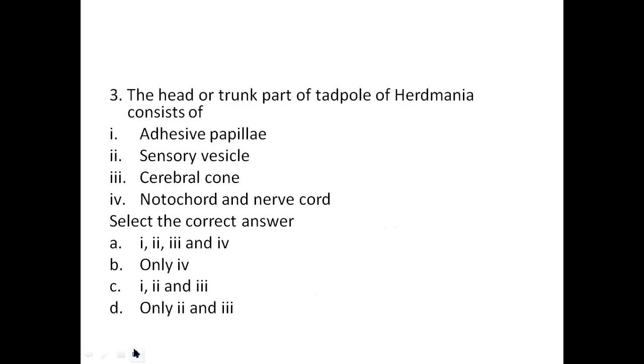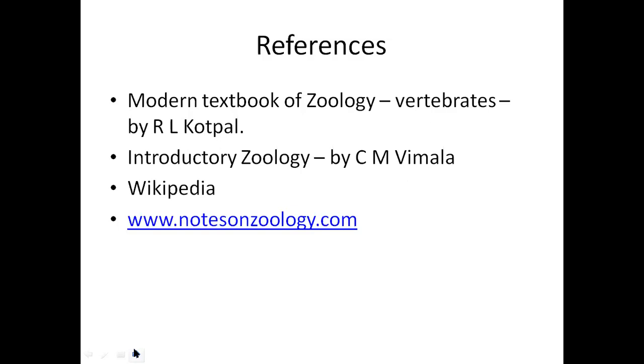Question 3 — The head or trunk part of the tadpole of Herdmania consists of: adhesive papillae, sensory vesicle, cerebral cone, notochord, or nerve cord. The correct answer is options 1, 2, and 3 — adhesive papillae, sensory vesicle, and cerebral cone. Notochord and nerve cord are present only in the tail region.